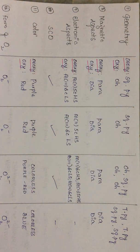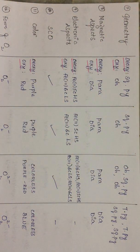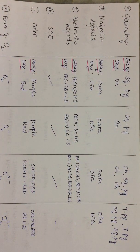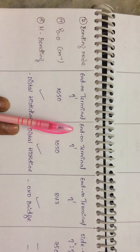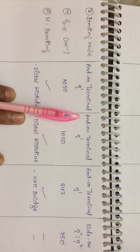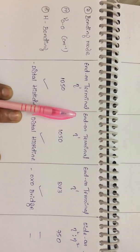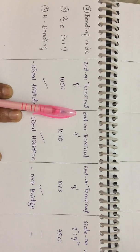Regarding the form of dioxygen: in hemoglobin and myoglobin, dioxygen exists as a superoxo form, whereas in hemerythrin and hemocyanin it exists as a peroxo form.